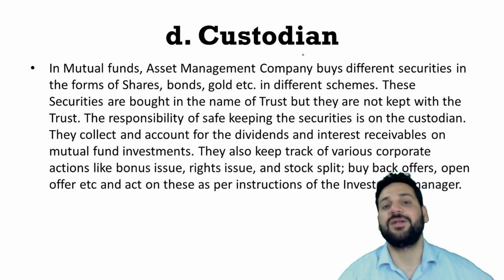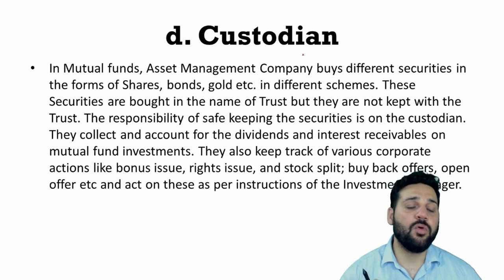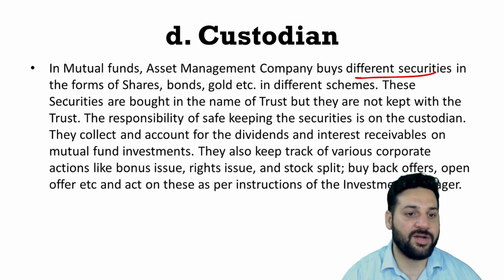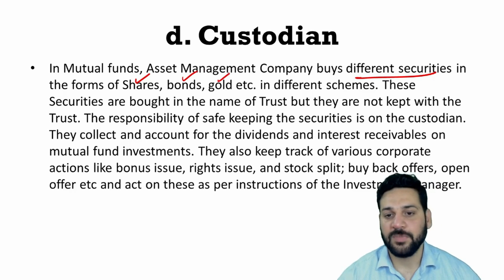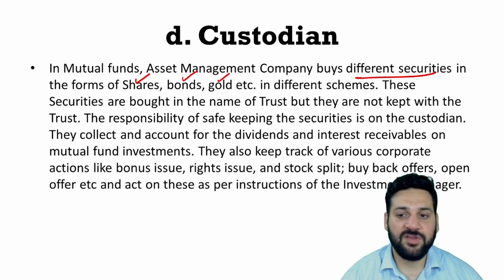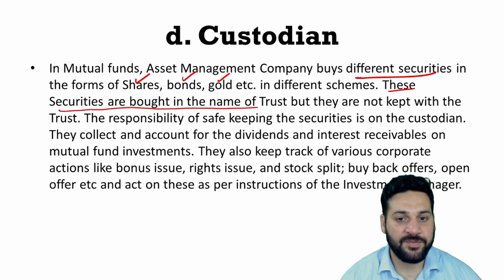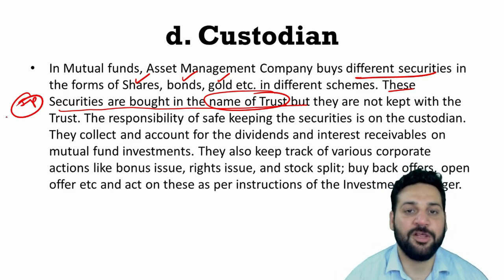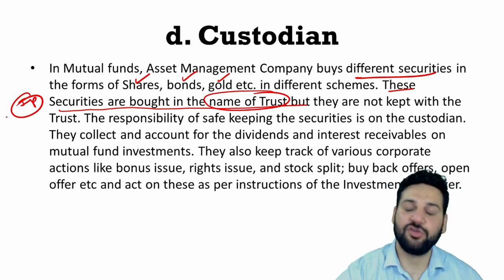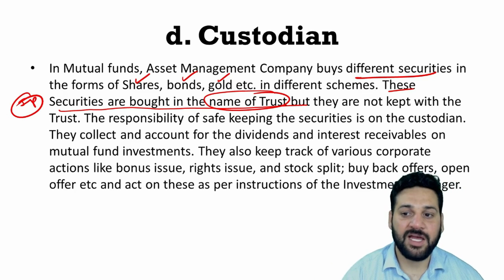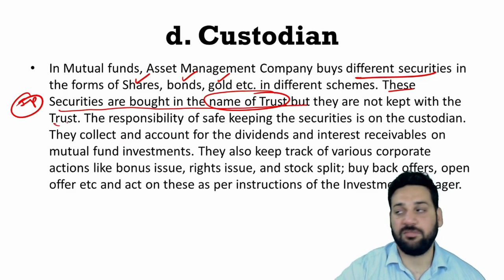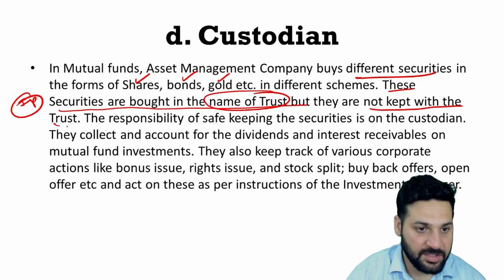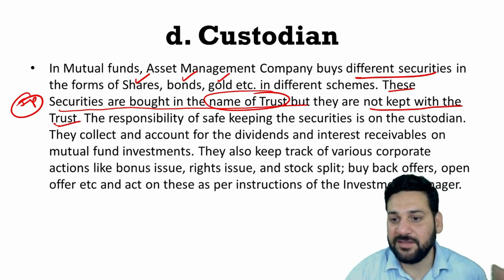The custodian holds all the stocks and investments made in the mutual fund. The AMC buys different securities in the form of shares, bonds, gold, etc. in different schemes. These securities are bought in the name of the trust — not in the name of the AMC. However, they are not kept with the trust; the responsibility of safe-keeping the securities lies with the custodian.